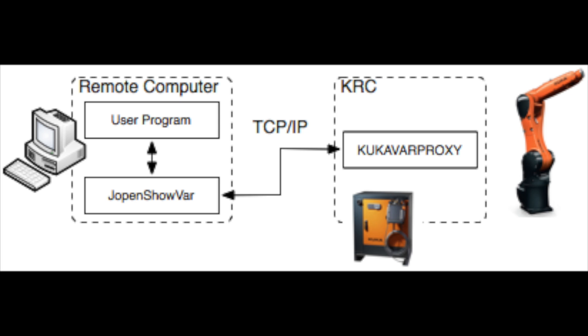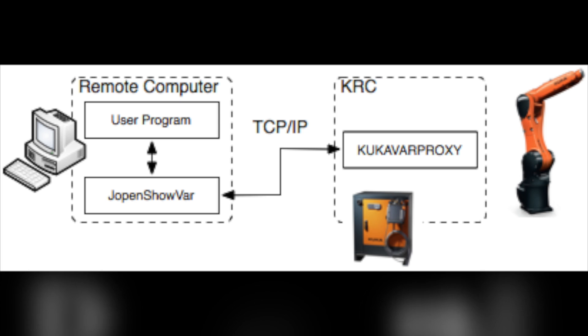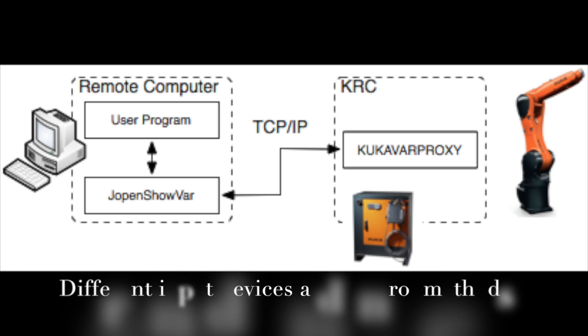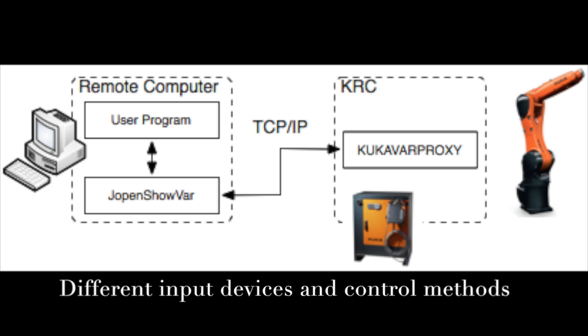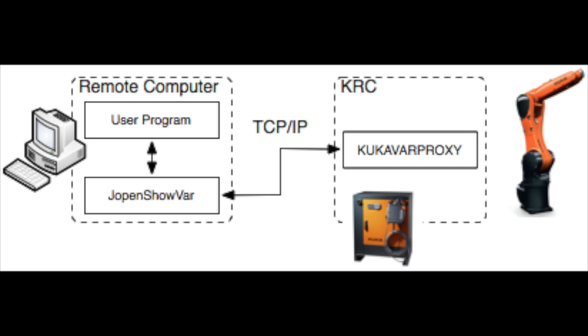JOpenShowVar makes it possible to use different input devices and to develop alternative control methods. To show the potential of the proposed interface, two case studies are presented.